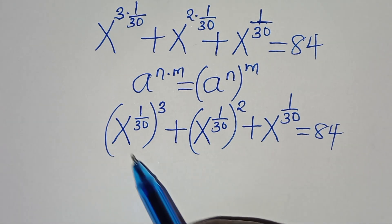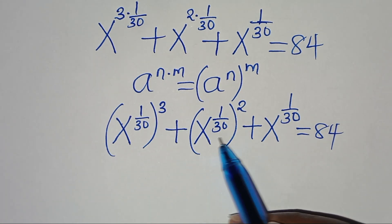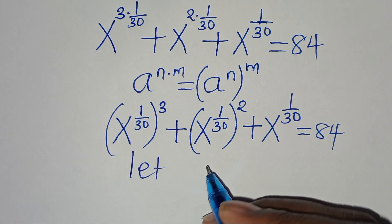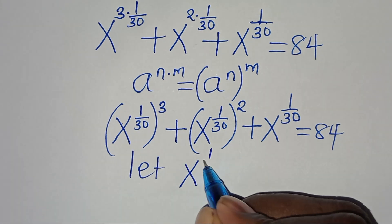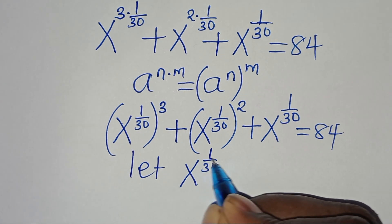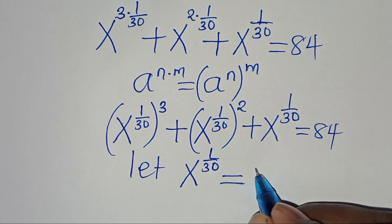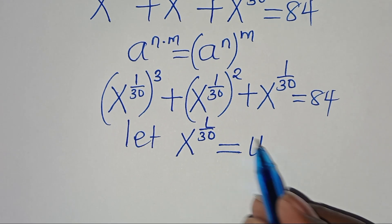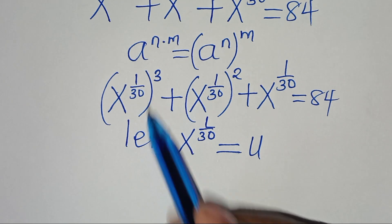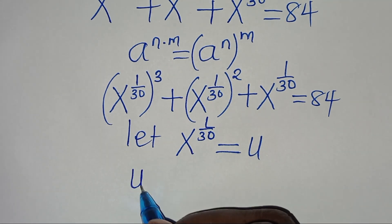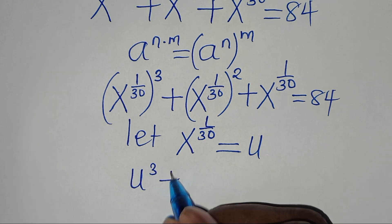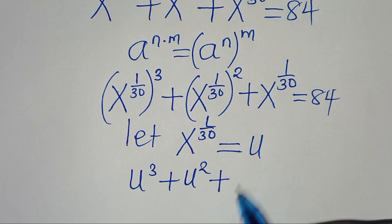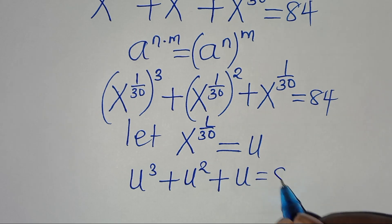We have that x to the power of 1 over 30 is common here, and that implies we can let x to the power of 1 over 30 be equal to u. Substituting u, this becomes u to the power of 3 plus u to the power of 2, then plus u, equals 84.